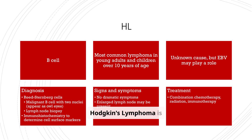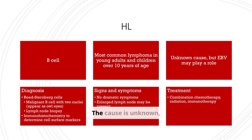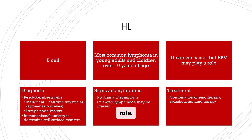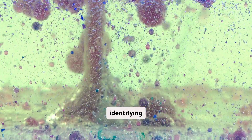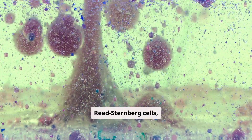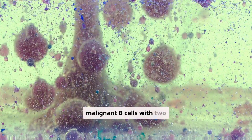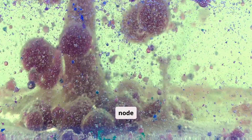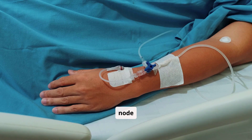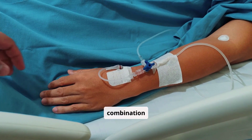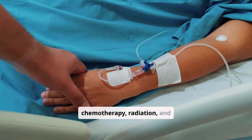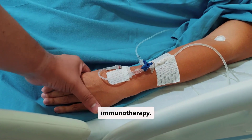Hodgkin's lymphoma is most common in young adults and children over 10 years of age. The cause is unknown, but EBV may play a role. Diagnosis relies on identifying Reed-Sternberg cells — malignant B cells with two nuclei — in a lymph node biopsy. Treatment involves combination chemotherapy, radiation, and immunotherapy.